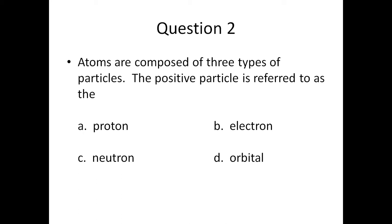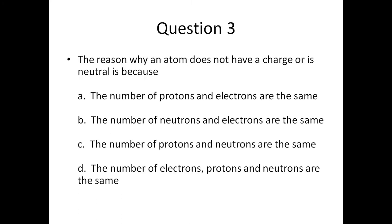Question two: atoms are composed of three types of particles. The positive particle is referred to as the — A) atom, B) electron, C) neutron, or D) orbital. Question three: the reason why an atom does not have a charge or is neutral is because — A) the number of protons and electrons are the same, B) the number of neutrons and electrons are the same, C) the number of protons and neutrons are the same.